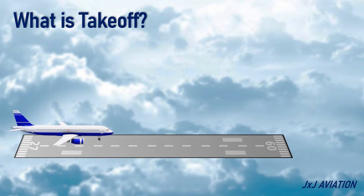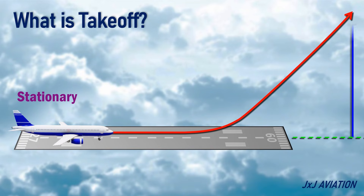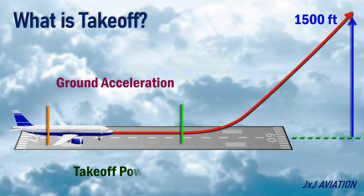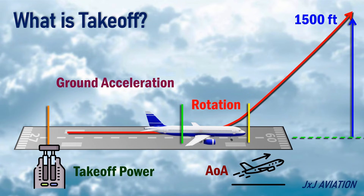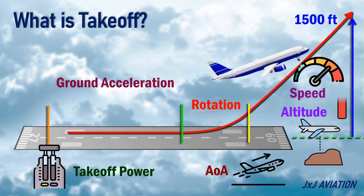An aircraft takeoff is a flight phase which starts when the aircraft is stationary on the runway and ends when the aircraft climbs to a height of 1,500 feet above ground level. This phase begins with the ground acceleration, where the engine power is increased to takeoff power. After reaching a particular speed, the aircraft's angle of attack is increased. This is called rotation. The aircraft lifts off and becomes airborne. The speed and altitude of the aircraft will continue to increase.